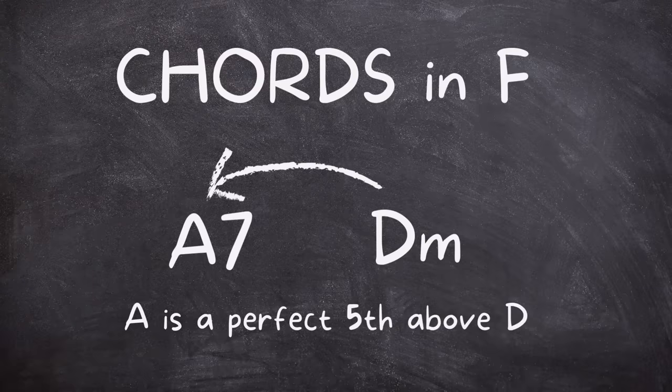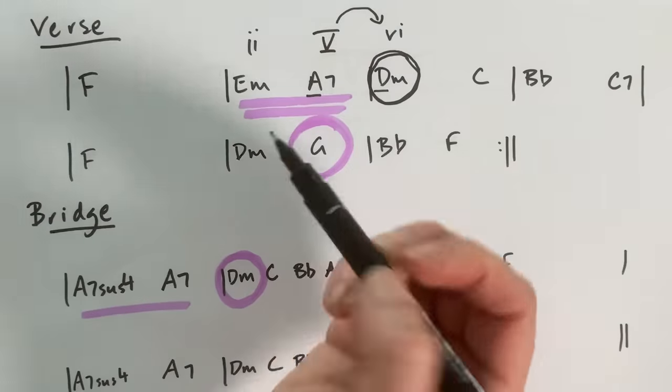Even if you don't understand the music theory, here's the simple rule: whatever chord in the key you want to play, precede it with a dominant 7 chord that is a perfect 5th above the root of the target chord. But that's not all — what makes this really sophisticated is the chord that comes before the A7. It is the E minor chord, which creates this 2-5 combo that produces this sophisticated, beautiful sound, cascading down to the D minor chord.